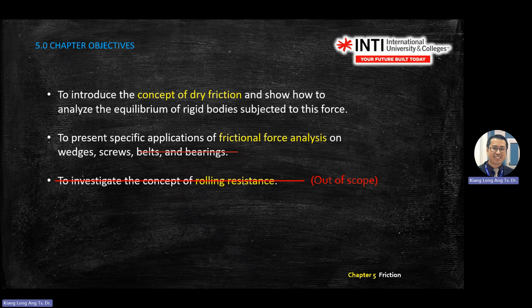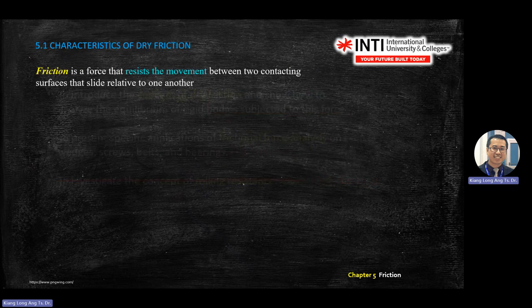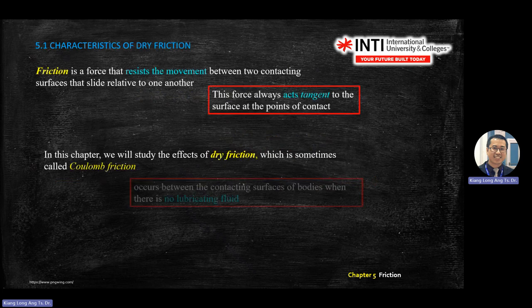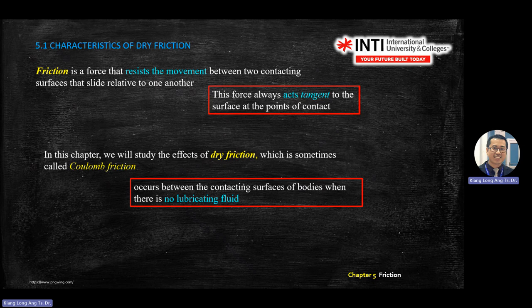You may cover belts and bearings in design of machines or another module. The concept is still the same. For friction, we only focus on dry friction — meaning no liquid friction, no lubricant friction. The condition is dry, either on a smooth or rough surface. Some textbooks call it Coulomb friction, but in this module I will just use the term dry friction.